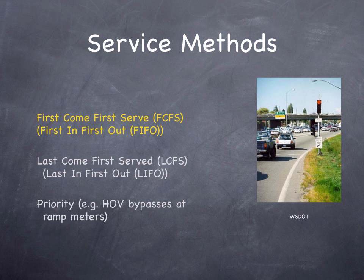How are customers served? There are several methods. First come, first served — also called first in, first out — differs from last in, first out. A ramp meter is an example of a first-in, first-out process. Whoever got to the ramp meter first goes to the front of the queue, then whoever came next goes behind them, and so on. The person at the front of the queue is the first one to leave.